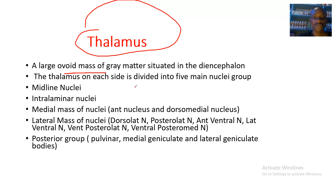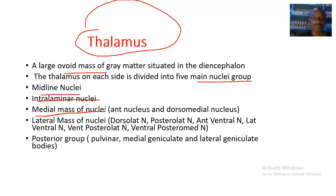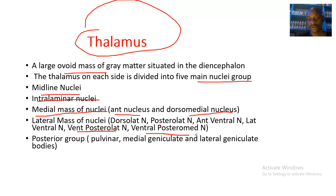The thalamus on each side is subdivided into five main nuclei groups. We have the midline nuclei, the intralaminal nuclei, the medial mass nuclei composed of the anterior nuclei and the dorsomedial nuclei, and the lateral mass of nuclei composed of the dorsolateral nuclei, posterolateral nuclei, anterior ventral nuclei, lateral ventral nuclei, and ventral posterolateral and medial nuclei.